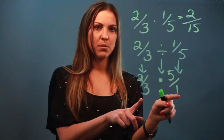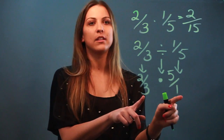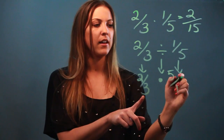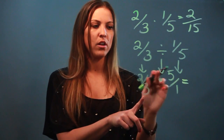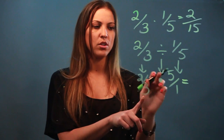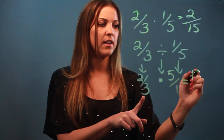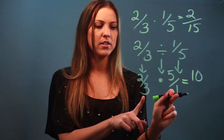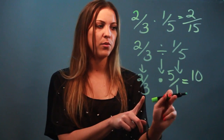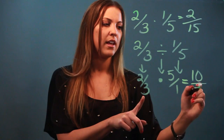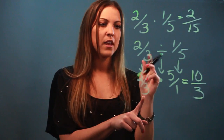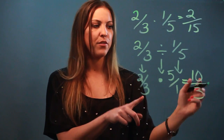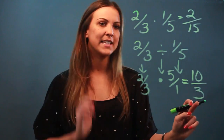Now I have a multiplication problem, so I do it the same way as before: numerator times numerator, 2 times 5 is 10, and denominator times denominator, 3 times 1 is 3. So 2 thirds divided by 1 fifth is 10 thirds.